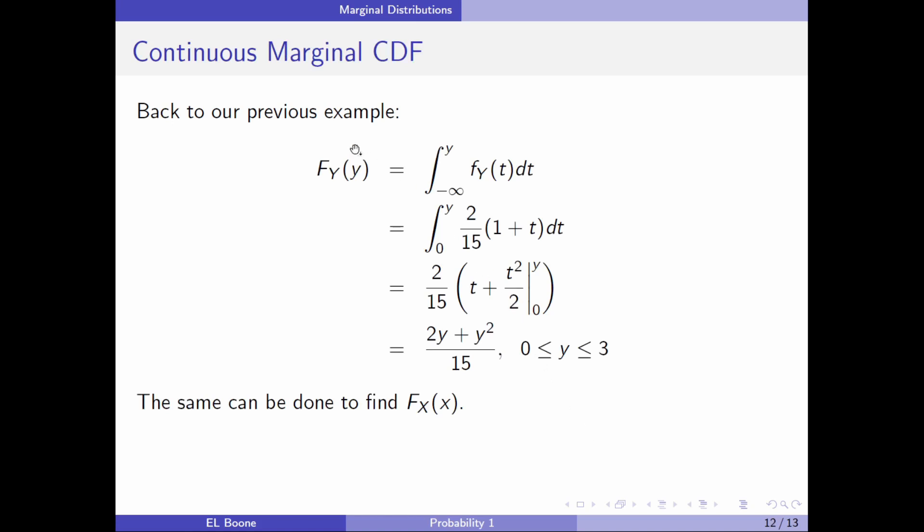Okay, the other one we can also do is we can come up with a marginal CDF. Once I have the PDF, I can come up with a CDF. And this is done by integrating from negative infinity to y of our marginal distribution. So here it goes from 0 to y, 2 over 15, 1 plus t. We can't put y here because then it becomes ill-defined. So we have t dt. We plug all of this in. We get t plus t squared over 2 and the quantity 2 over 15 out front, evaluated at 0 and y. So we end up with 2y plus y squared divided by 15 is our marginal CDF in this case.